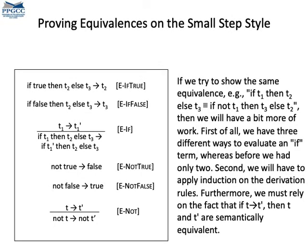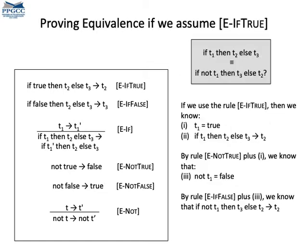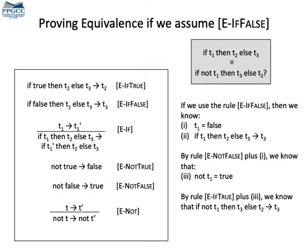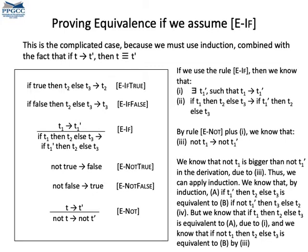If we had to use the small step style to do the same proof, it would have been more difficult. We need induction because the rules use premises that do not terminate immediately. Using the small step style, there are three rules that we can apply on the if-then-else. If we apply if-true, then the proof is simple. I've written it above and you can read it. No induction is necessary, actually. Assuming if-false is the same, no induction is necessary. You can stop the video and read the proof above.